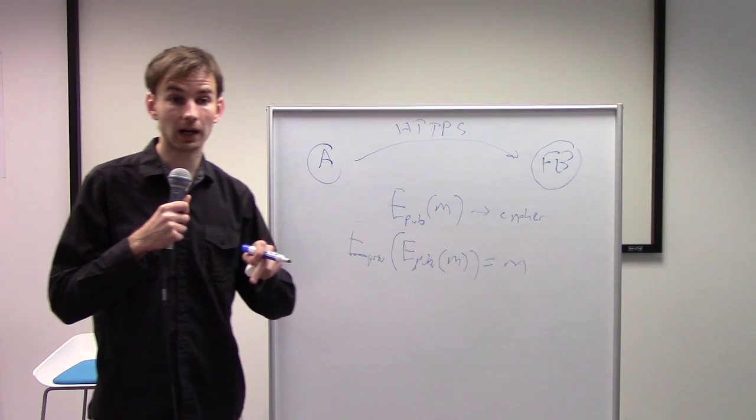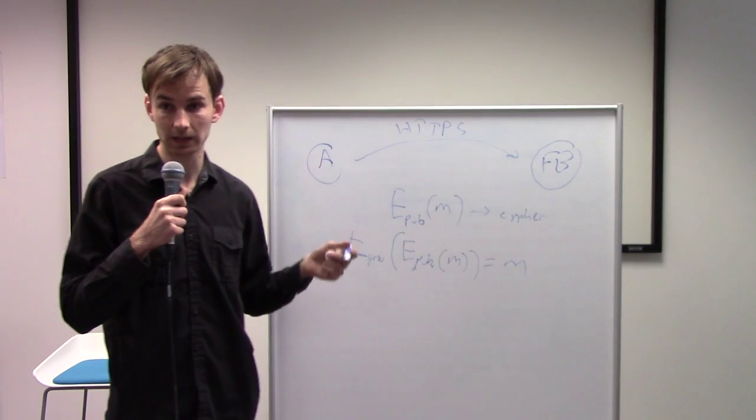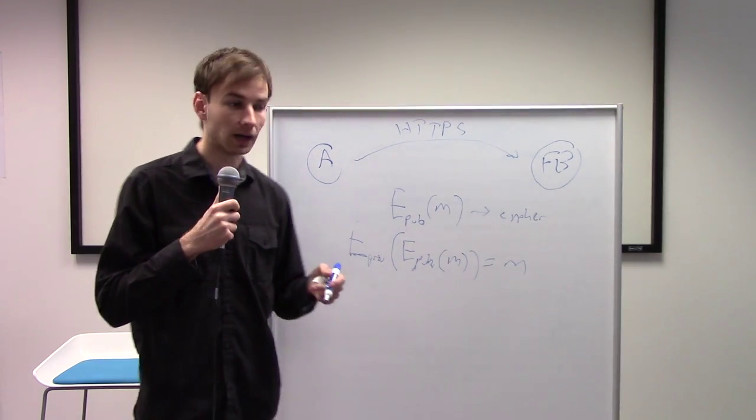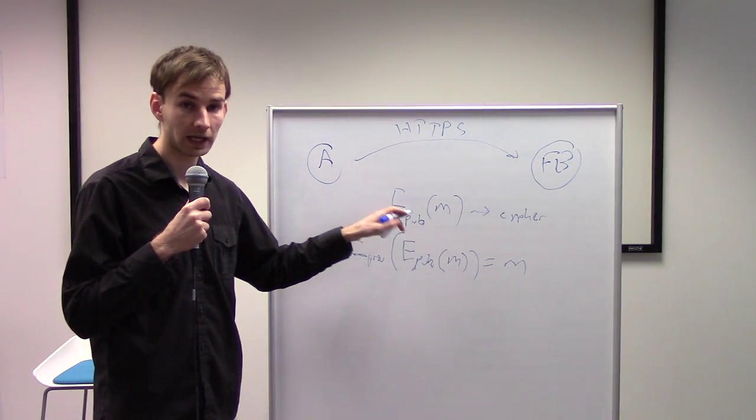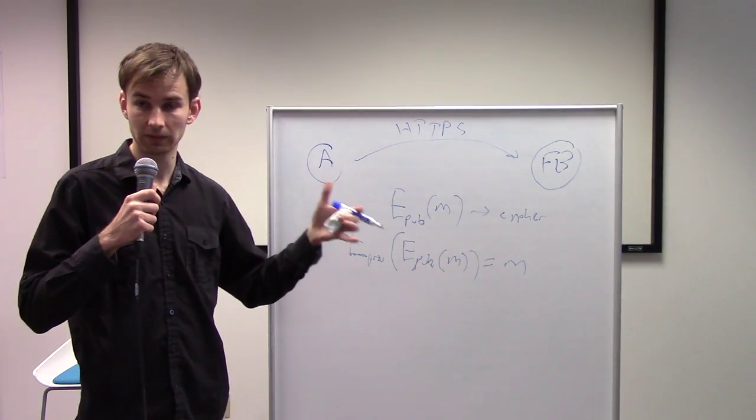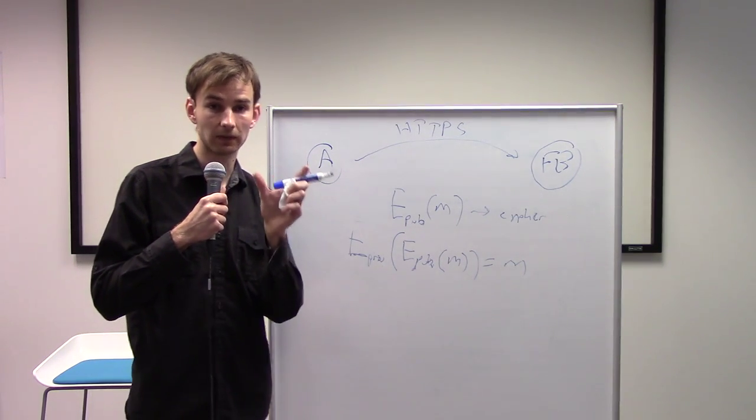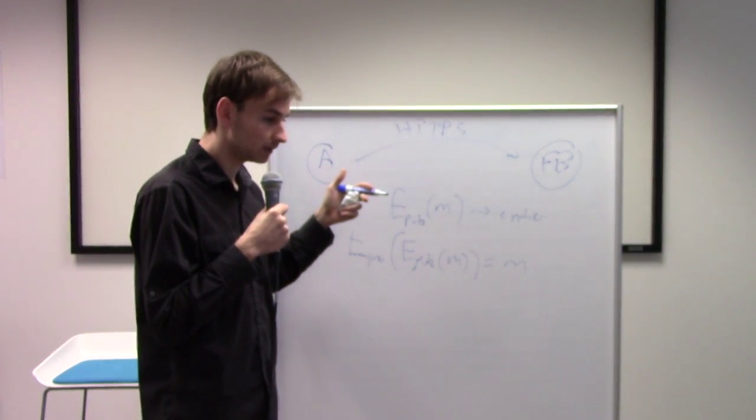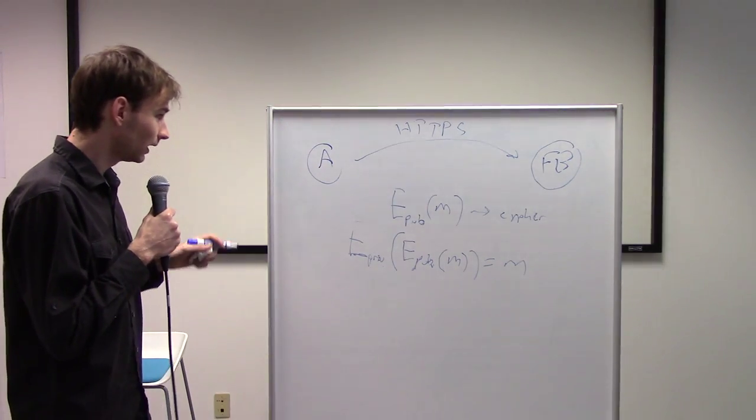This is also actually how Bitcoin works. When somebody has an address, what is the address? When you want to send somebody money in Bitcoin, what are you sending that to? What you're doing is the address is simply somebody's public key has been passed through a hash function. They take a large bit of information and they pass it through a function that turns it into a number of a fixed size called the hash and that's what you're sending coins to.